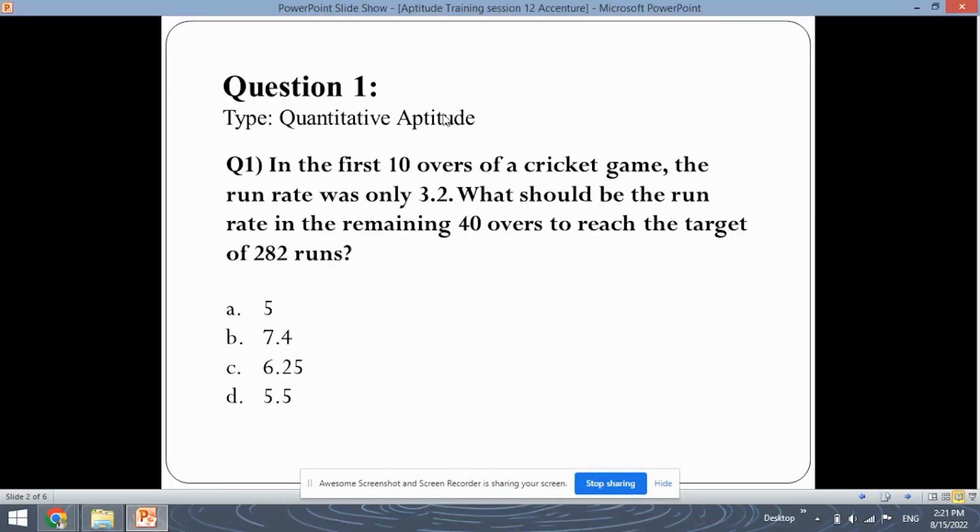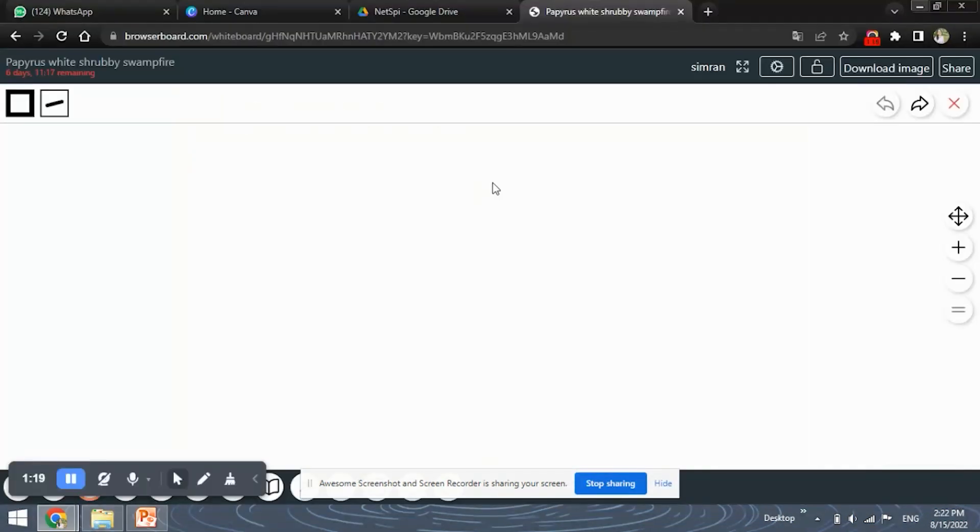So what we have been given, you must have understood that it is a 50 overs match. Why? Because in the first 10 overs, the run rate is given as 3.2 and the remaining overs are given as 40 overs. So it is a total of 50 overs match. And what you need to calculate is the run rate in the remaining 40 overs to reach the target of 282 runs. So let's see how to solve this.